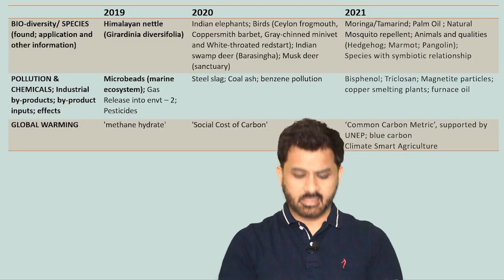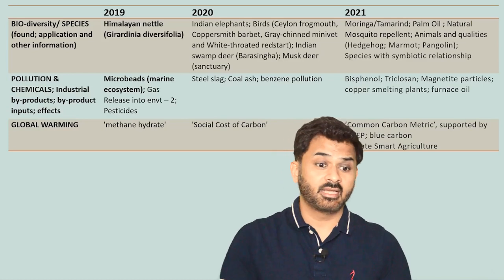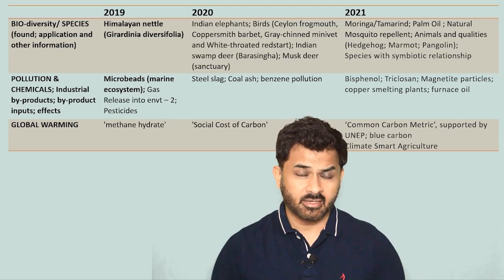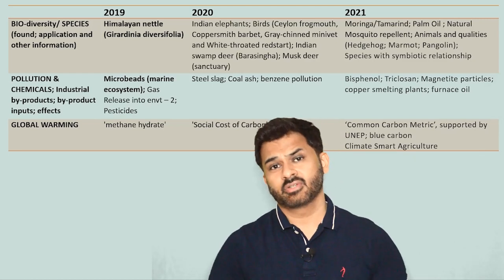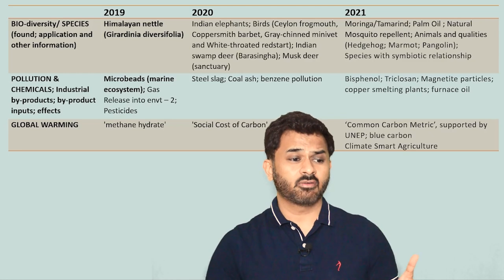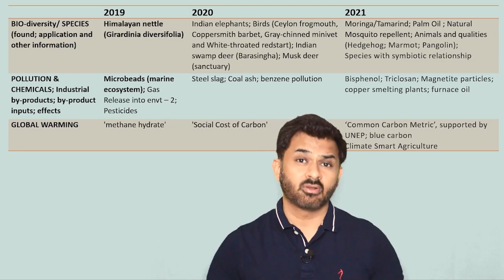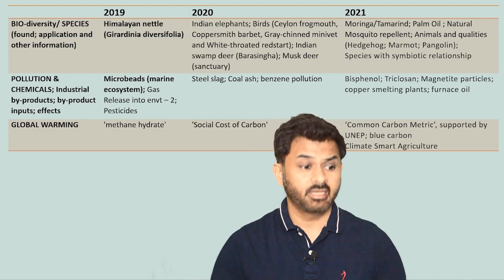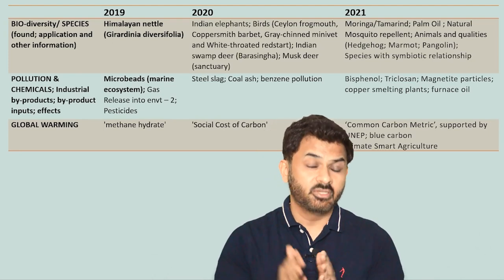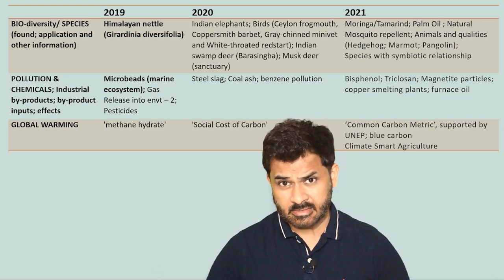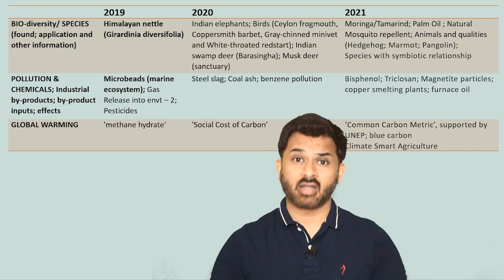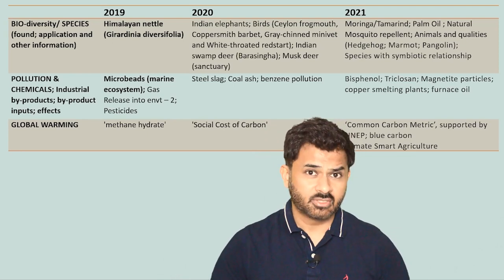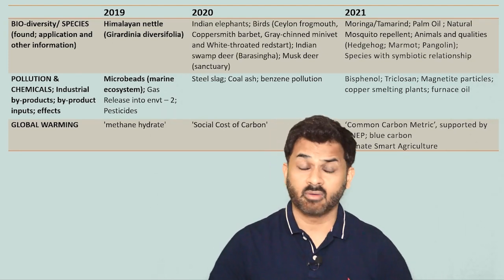In the environmental sector, questions have been asked very frequently — and this is a very important area — on biodiversity and questions related to species: where species are found, what are the applications of those species, and other related information. From 2019 to 2021, an increasing number of questions are asked on this — four or five questions have even been asked on this particular area. Please prepare this properly. There have also been questions on pollution-related issues, especially byproducts from industries, chemical pollutants, and pollutants from industries or agriculture released into the environment. Every year, one, two, or three questions are asked from this area.